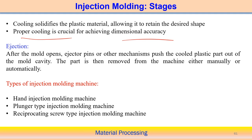After the cooling phase, the complete component is ready for ejection. We can open the mold and use ejector pins or other mechanisms to push the cooled plastic part out of the mold cavity. The final component is then collected, either manually, semi-automatically, or in a completely automatic system. For mass production, a complete automatic system is preferred.